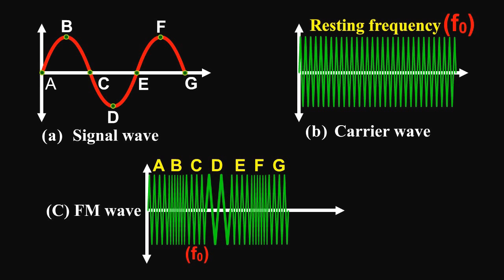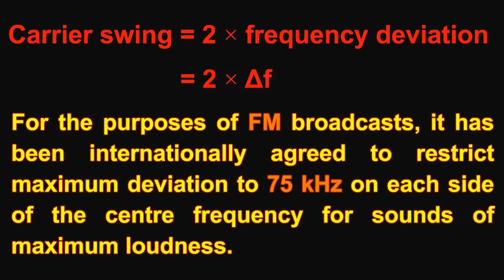When the signal is applied, the carrier frequency deviates up and down from its resting value f₀. The change or shift either above or below the resting frequency is called frequency deviation (Δf). The total variation in frequency from the lowest to the highest is called carrier swing (CS); hence, carrier swing equals two times the frequency deviation: CS = 2Δf. For FM broadcast, it has been internationally agreed to restrict maximum deviation to 75 kHz on each side of the center frequency for sounds of maximum loudness.